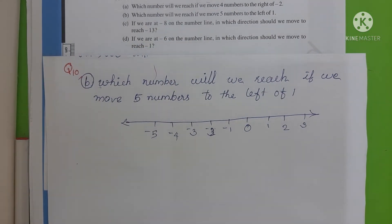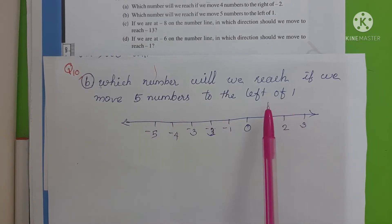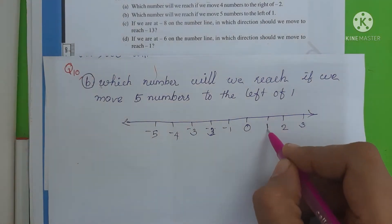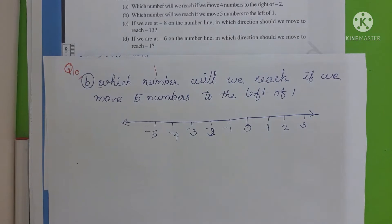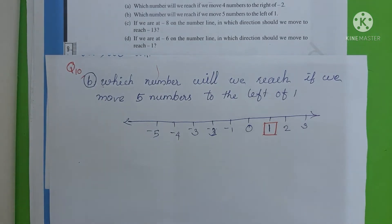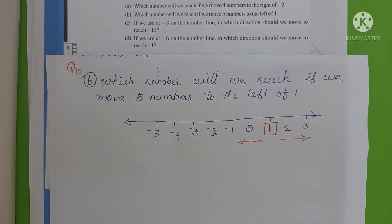Now we have to start from 1. The question says we have to move from 1 to the left side, 5 numbers. So first we find 1 on the number line. This is 1. We can move on the left side of 1. The left side goes toward negative numbers, and the right side goes toward positive numbers.